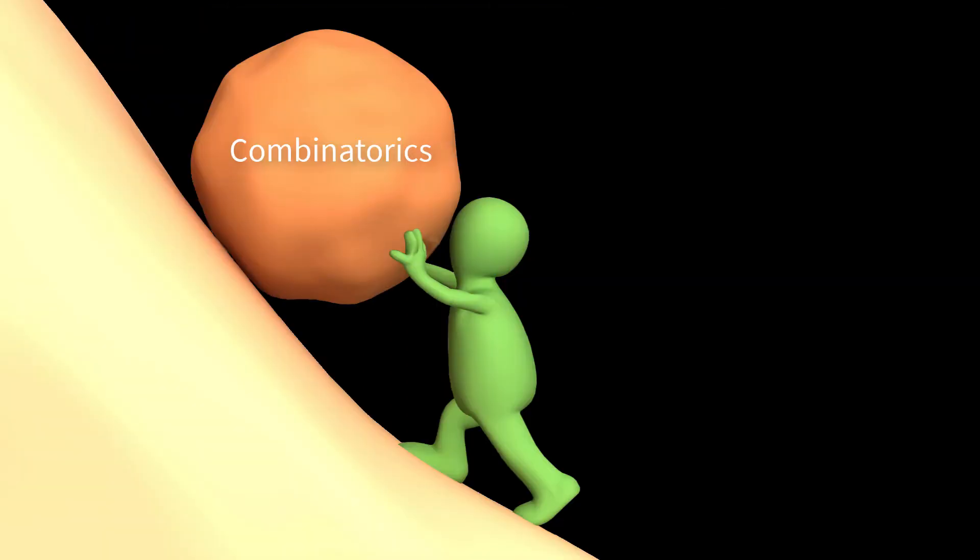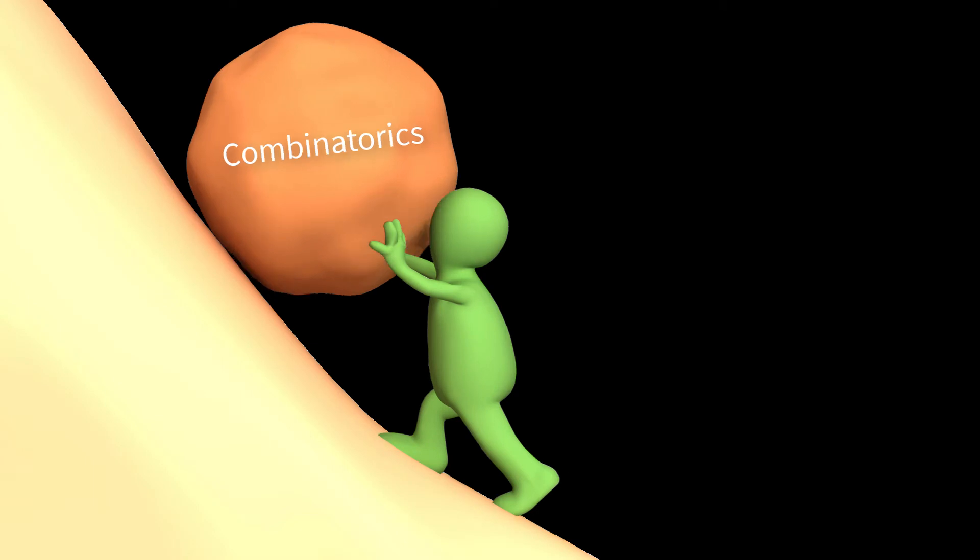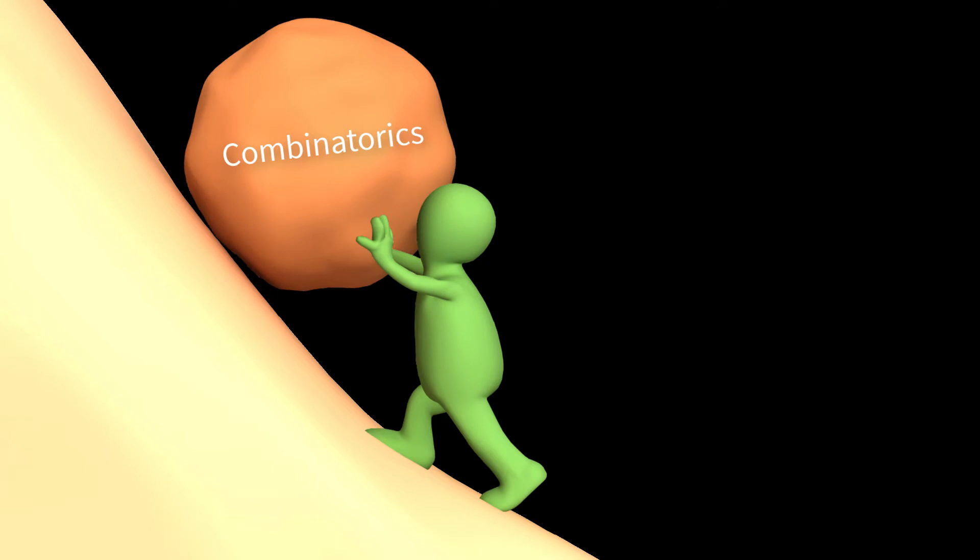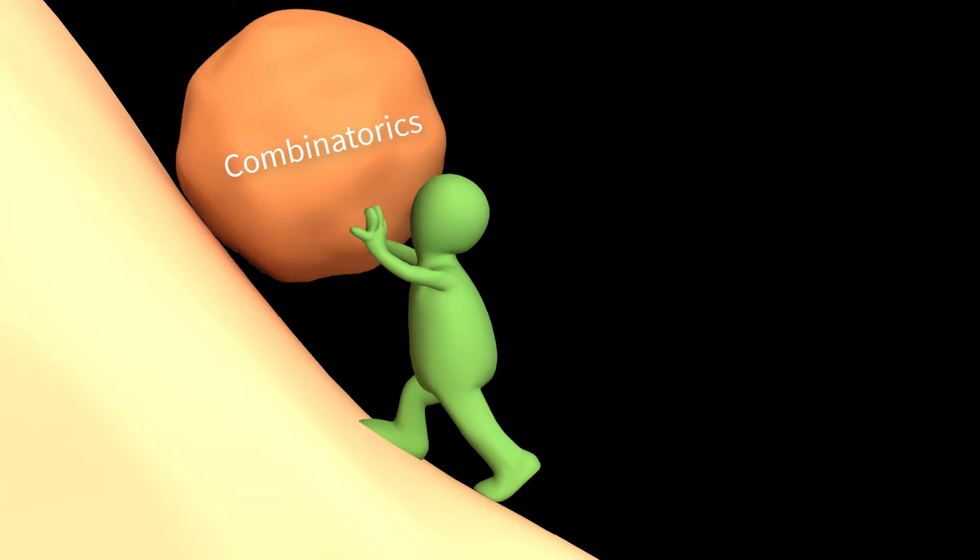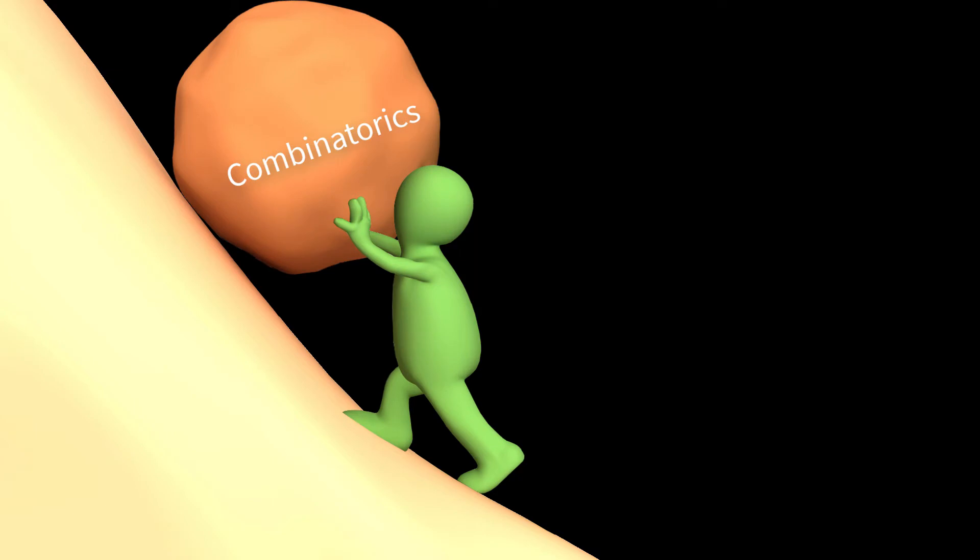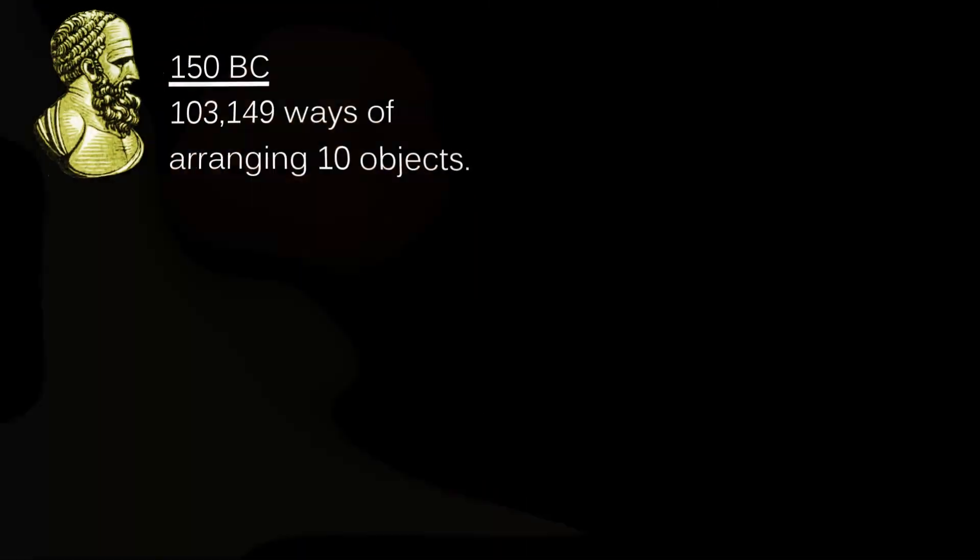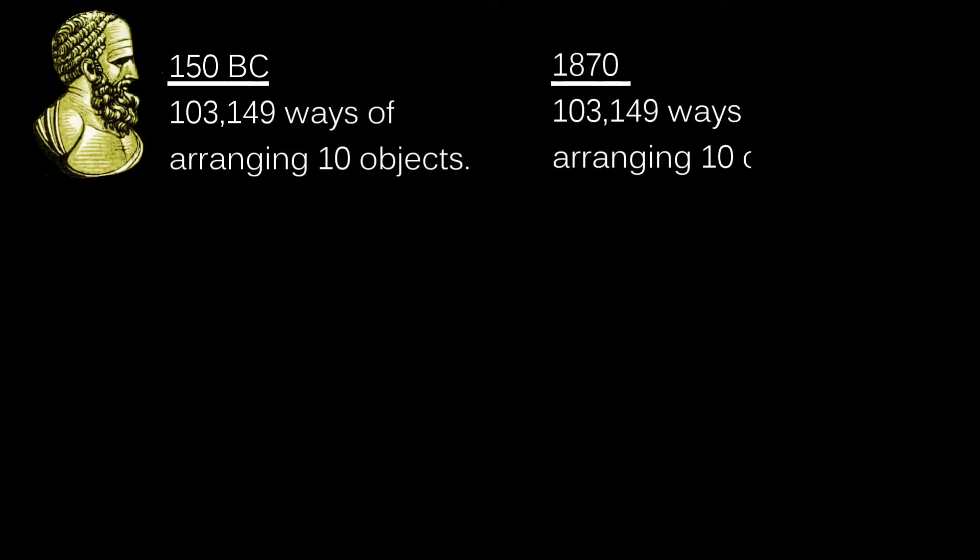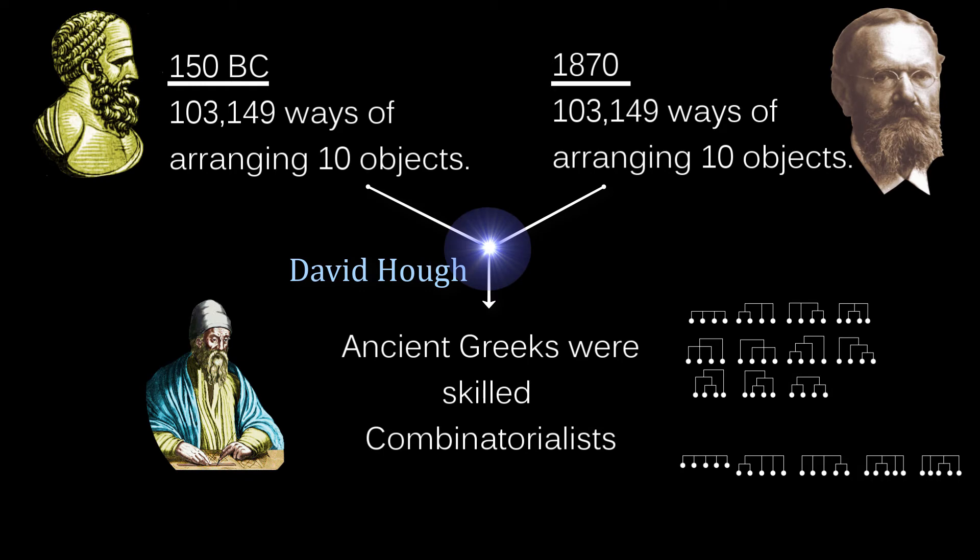In January 1994, David Hoff, a graduate student at George Washington University, was working through the exercises in Stanley's book. Hoff was 44 years old and had just two years previously decided to become a mathematician. It was he who finally connected Plutarch, and therefore Hipparchus, with the tenth Schroeder number.